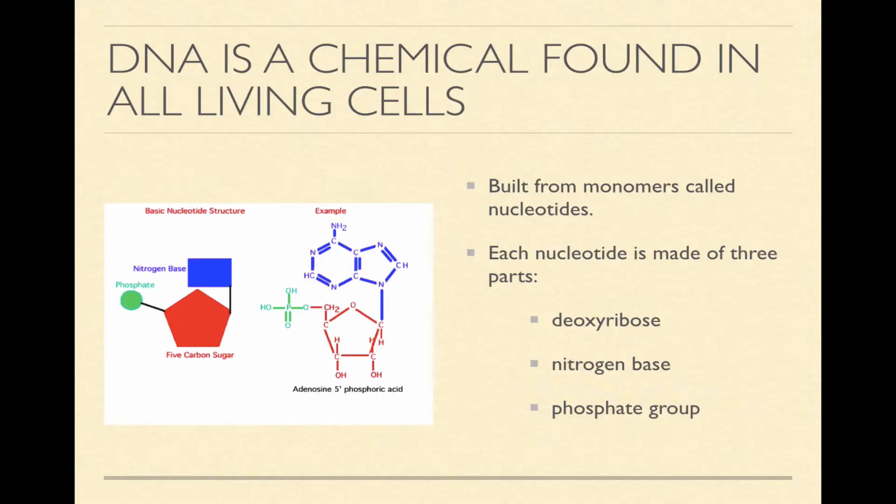DNA is a chemical found in all living things — it's just a chemical — and scientists did not know initially that DNA was in fact the chemical that stores genetic information. The first thing they figured out is that DNA is actually built from only four monomers called nucleotides.